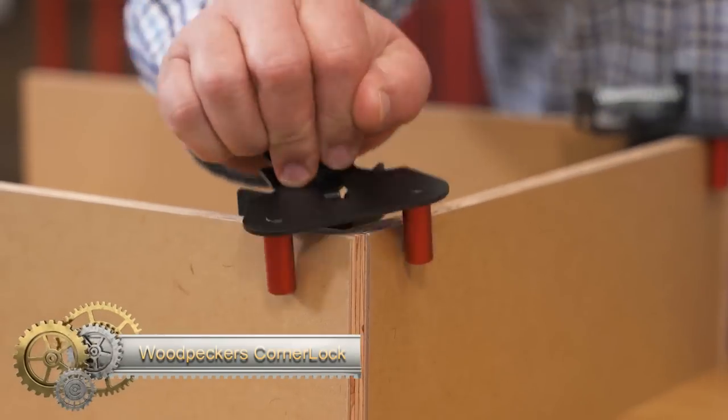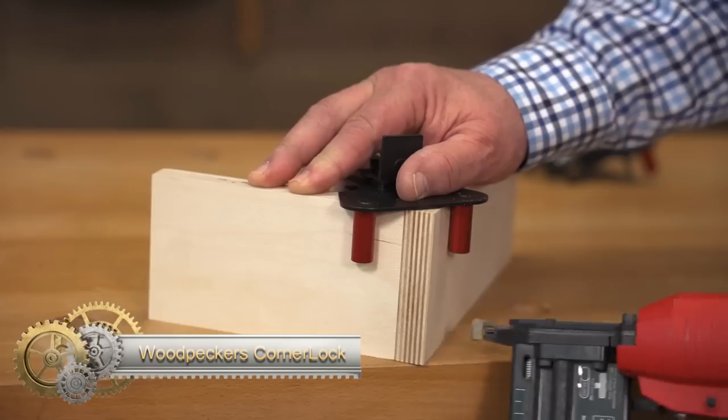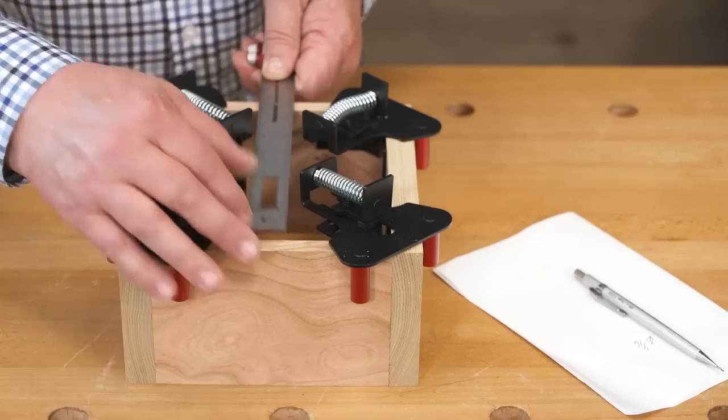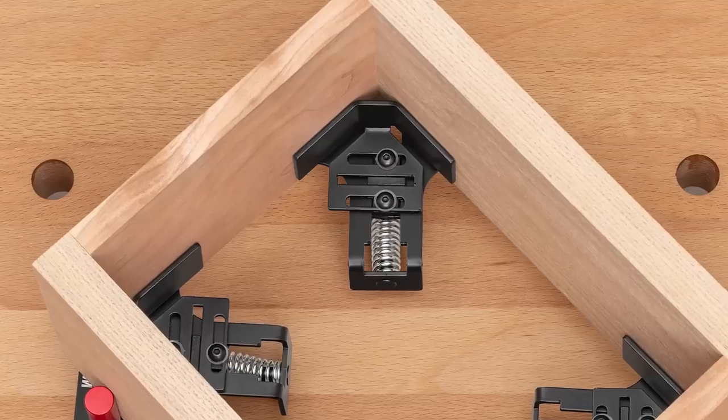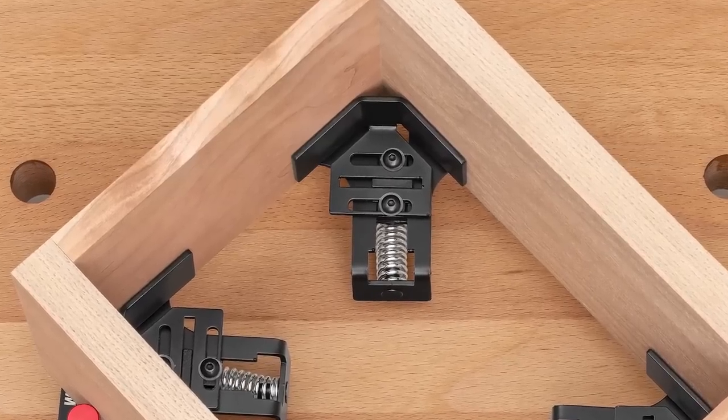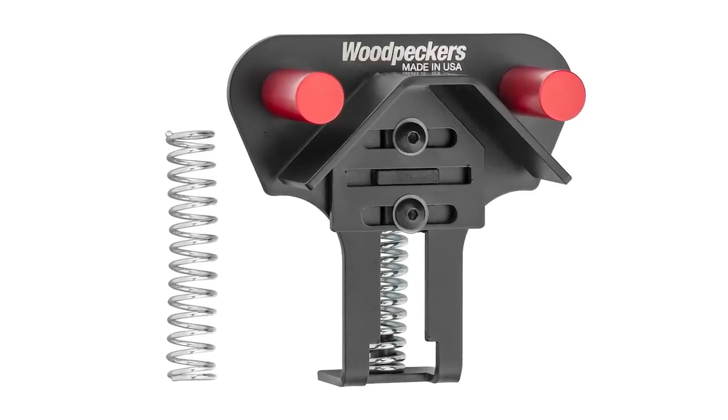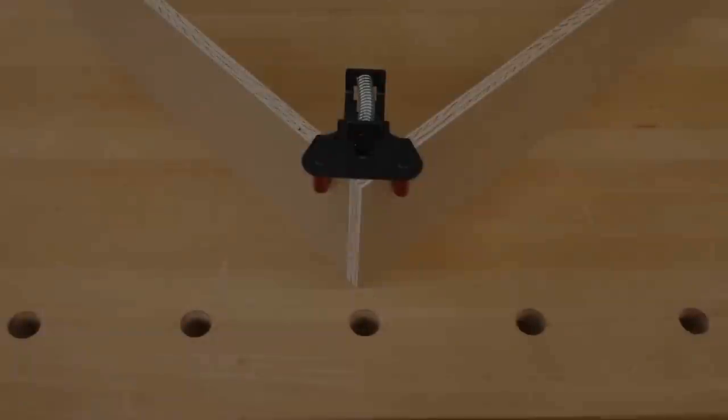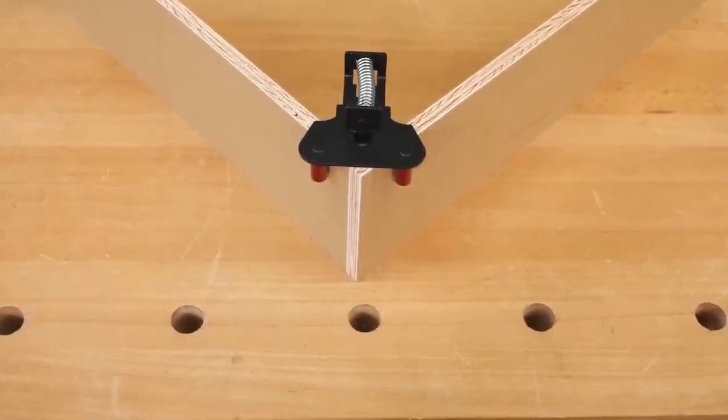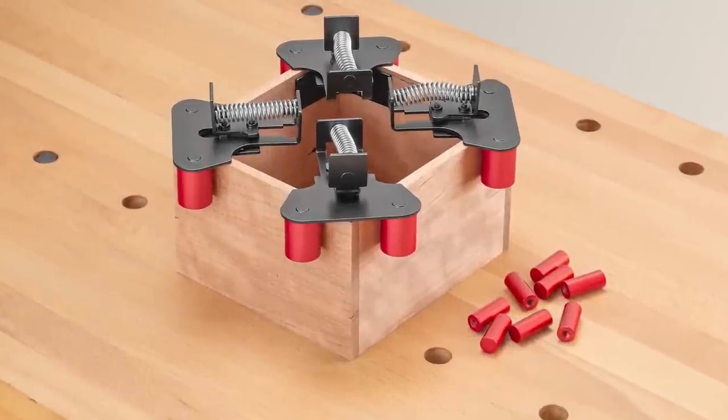Woodpeckers Corner Locks are spring-loaded corner clamps designed to hold two pieces of stock square to each other. Made from steel and aircraft-grade aluminum, they are formed on Woodpecker's computerized press brake for precision. Corner locks have a precision machined anodized aluminum cylinder as the reference surface. They are easy to use. Just compress the spring and drop them over the two pieces for perfect alignment.